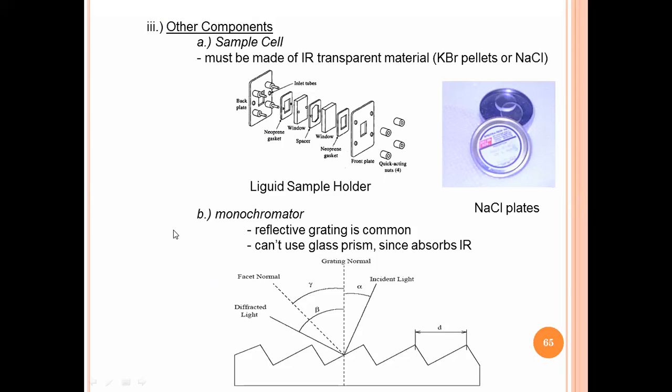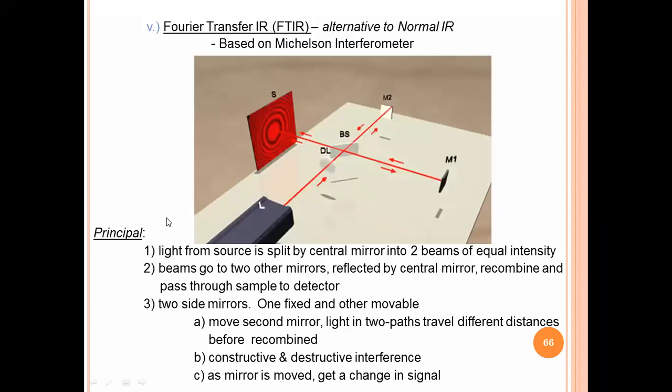Sample cell must be transparent to IR radiations. Generally KBr pellets or sodium chloride pellets - you can see in diagram. These are very transparent. Even though if you see sodium chloride or potassium bromide through naked eyes, these are non-transparent material. But the technique is such that the industry can prepare sodium chloride plates transparently. Then monochromators, as usual, different monochromator systems used to convert the wavelength into monochromatic radiations.